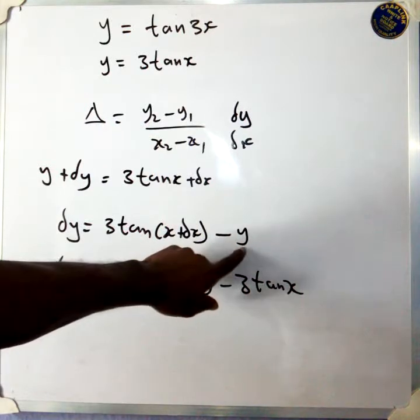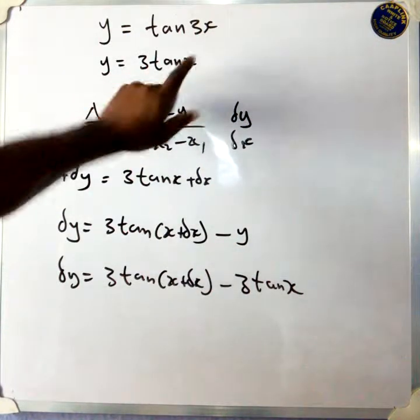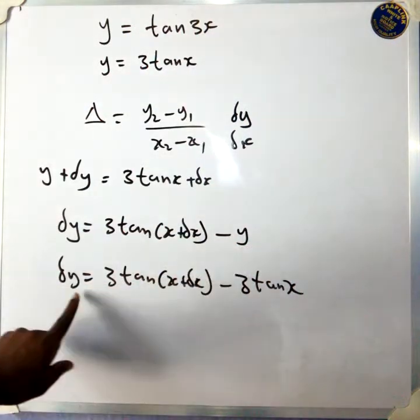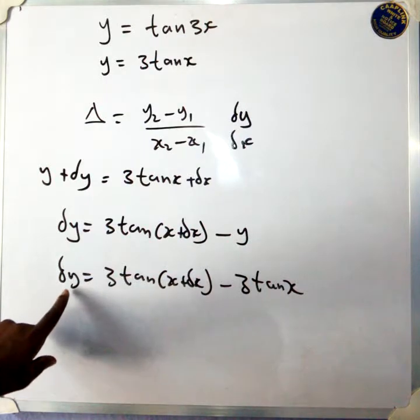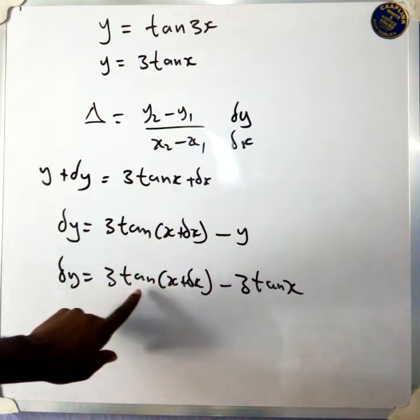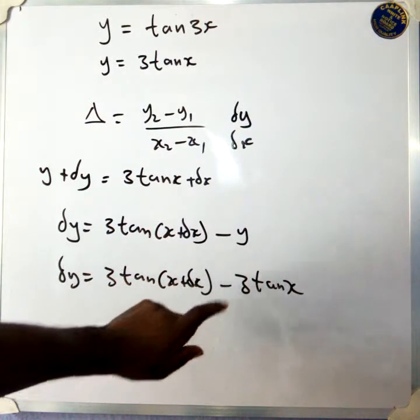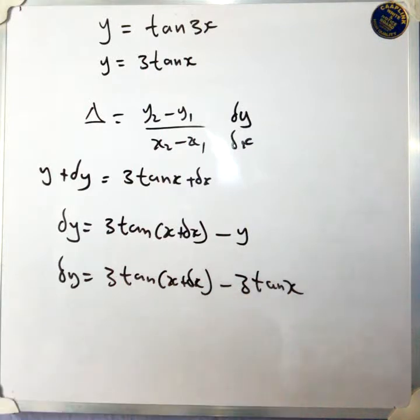Don't forget what your y is — it's tan(x). So you can put it back here. So you finally have delta y equal tan(x plus delta x) minus tan(x).